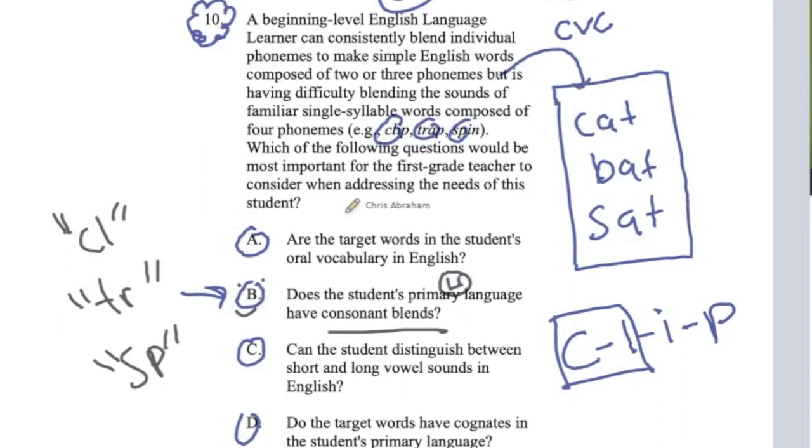Let's look at A. It talks about the target words here like clip, trap, spin not being in the student's oral vocabulary. Well here's the thing with A. It says here that the student is consistently having difficulty pronouncing these words. So they haven't mastered these words yet, so they're not quite in their oral language. They might partially be there, but they're still struggling with it. So it's not that they haven't been exposed to it. They've been exposed to it, but they still aren't getting the correct pronunciation of the words because they haven't mastered the consonant blends yet.